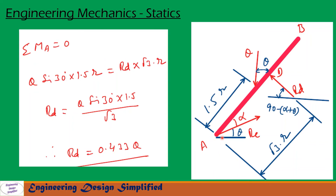Now let us take moments about A. Since A is a hinge, the sum of moments about A equals zero (ΣMA = 0). Moment due to Q about A is Q·sin30° × 1.5R — this is the component of Q perpendicular to the bar times the distance. Moment due to RD about A is RD × √3·R, since RD is already perpendicular to the bar. After simplification, we get RD = 0.433Q.